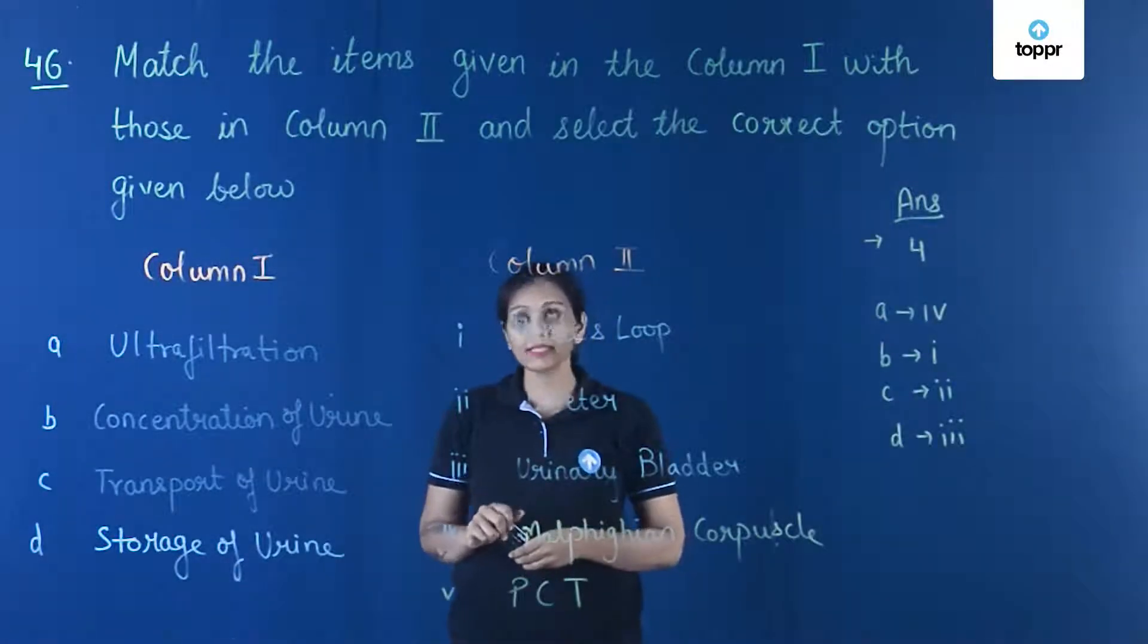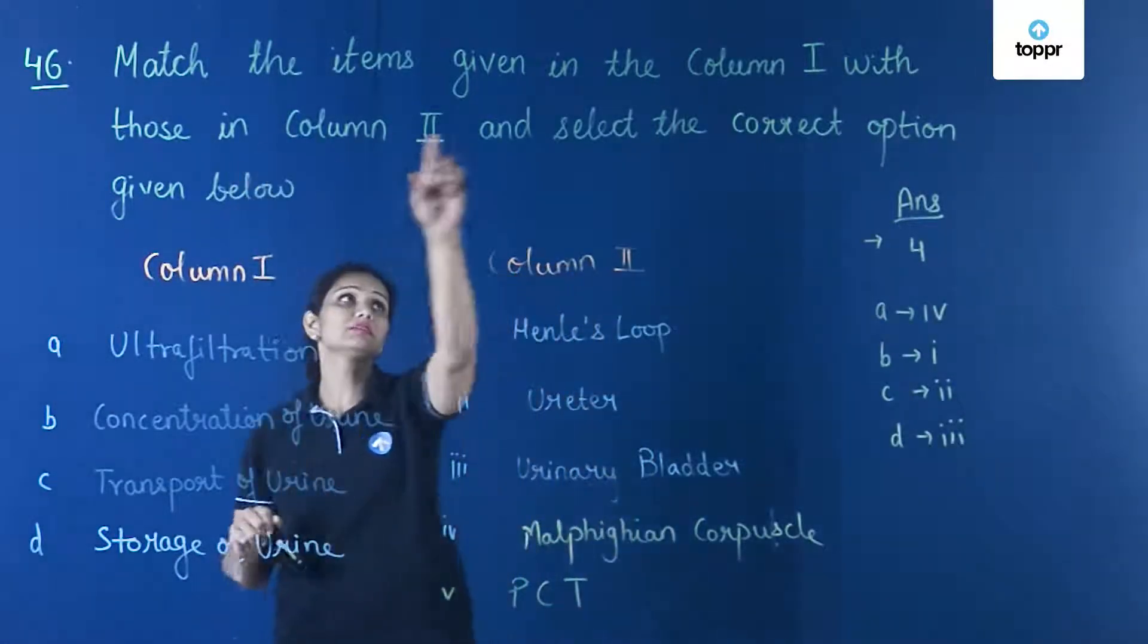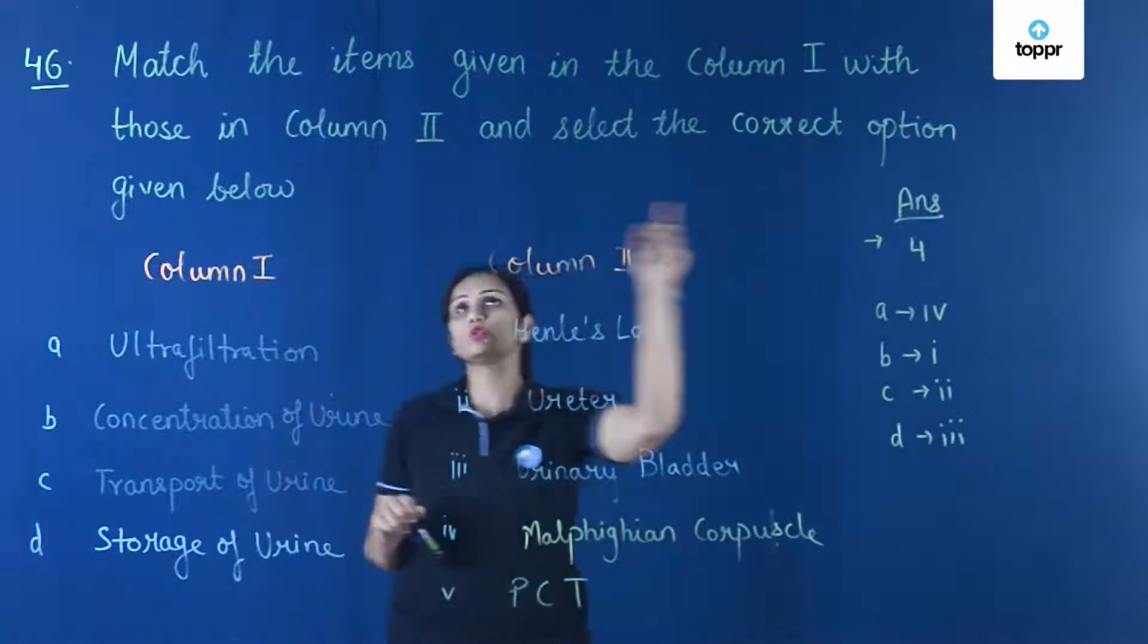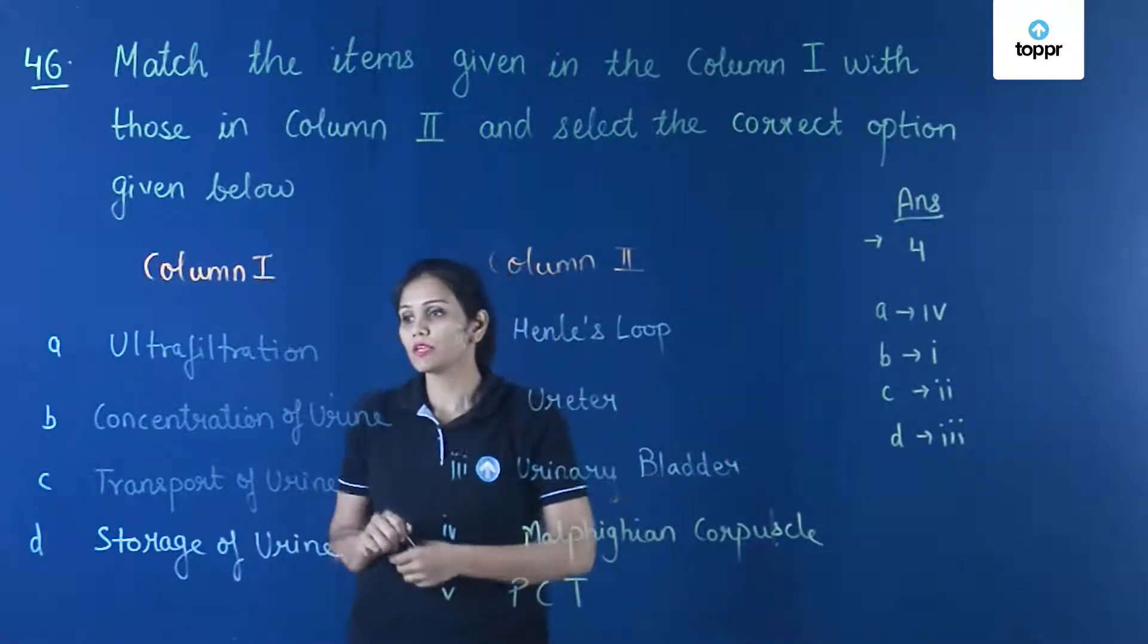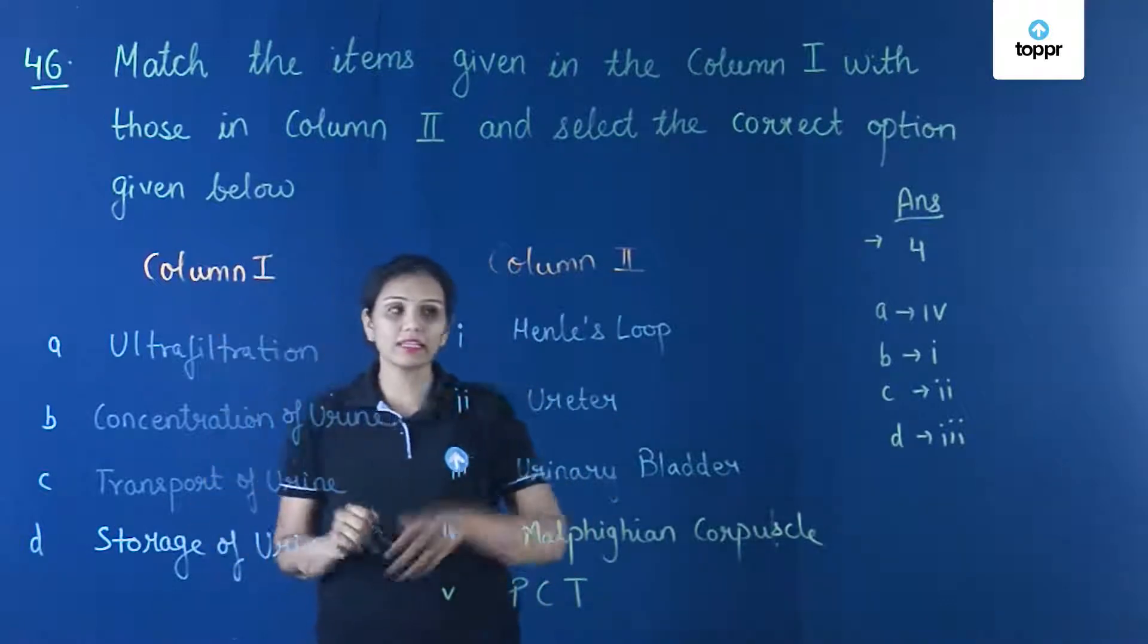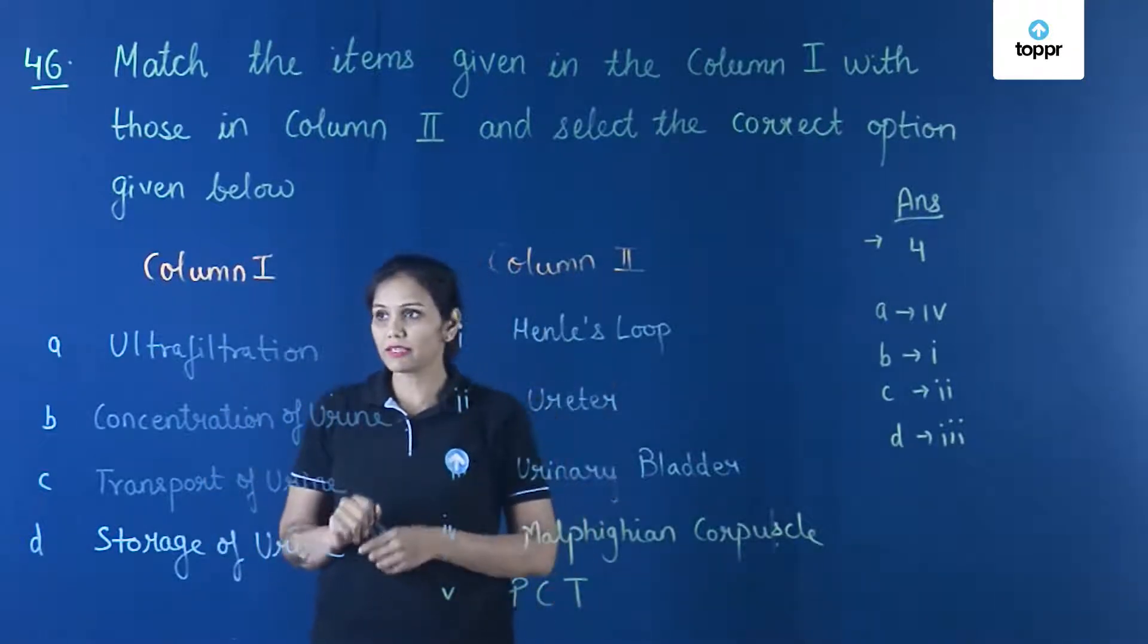Hi, question number 46 says match the items given in column 1 with those in column 2 and select the correct option given below. The functions and the kidney parts are given.